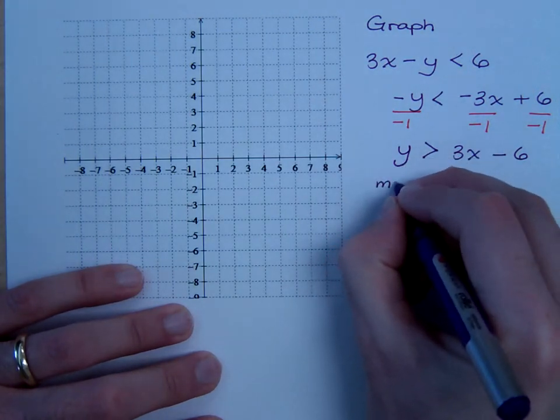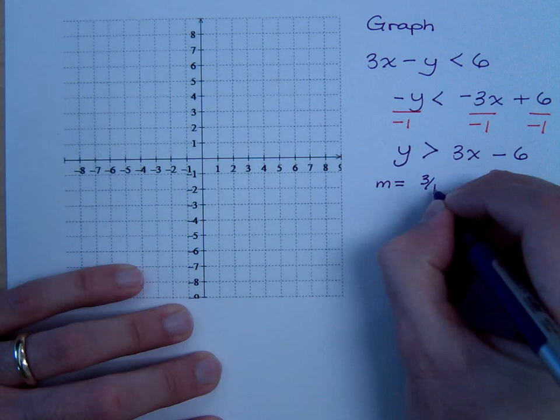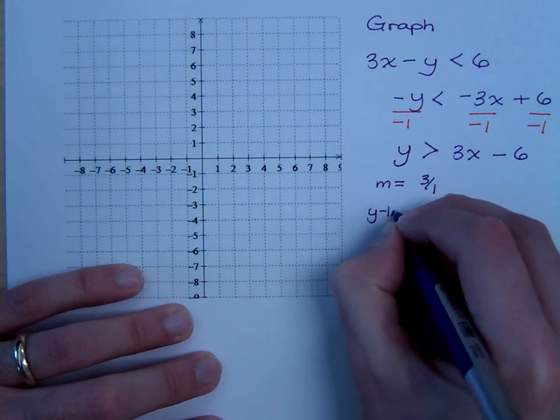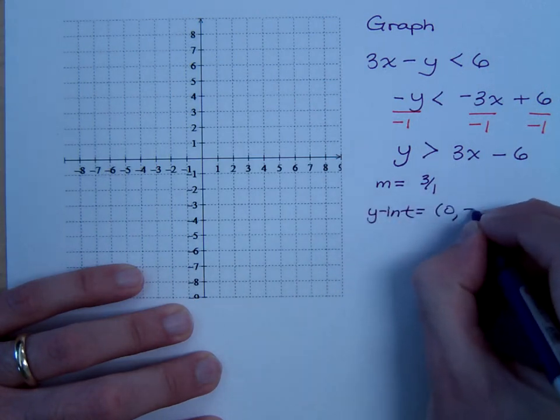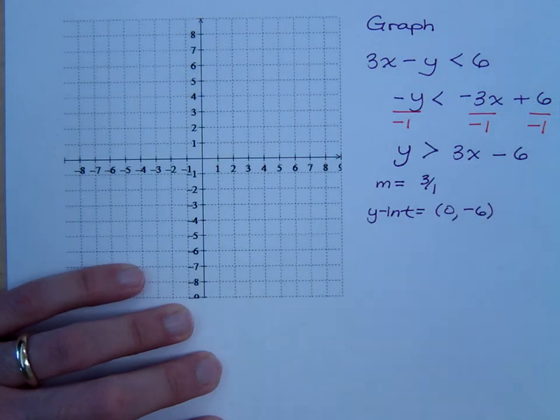So, what's my slope? 3 over 1. What's your y-intercept? Zero, negative six. Man, you guys are just owning this problem. That's right, you tell it. You give it to it, yeah.